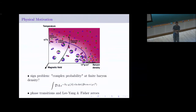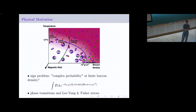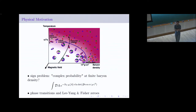The QCD phase diagram is a big open problem. Many aspects of it we understand better and better, but details about the high-density region and crossing phase transition lines — we still have a lot of trouble doing real calculations. As you all know, this is due to the sign problem coming from the determinant factor.